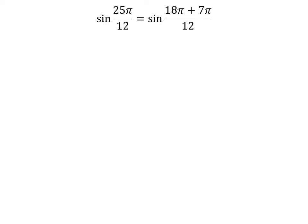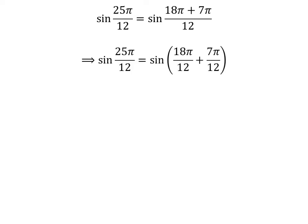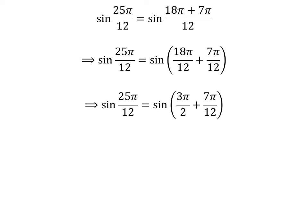25 times pi is equal to 18 times pi plus 7 times pi. So, sine of 25 times pi upon 12 is equal to sine of 18 times pi plus 7 times pi upon 12. The fraction can be expressed as the sum of two fractions, giving us sine of 18 times pi upon 12 plus 7 times pi upon 12. Cancelling out the common factor in the numerator and denominator gives us sine of 3 times pi upon 2 plus 7 times pi upon 12.